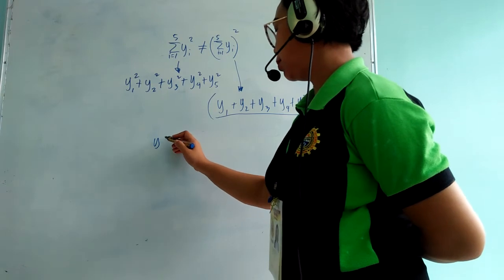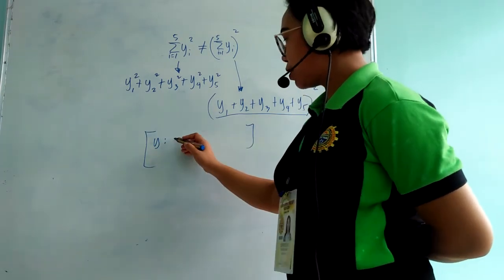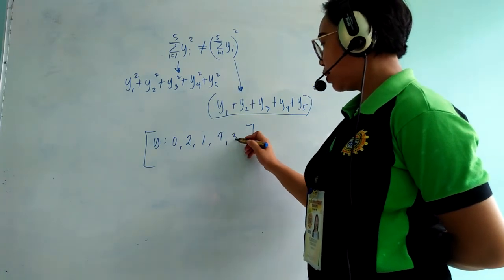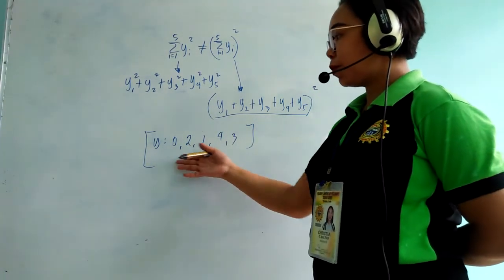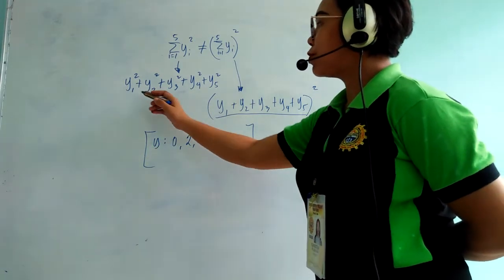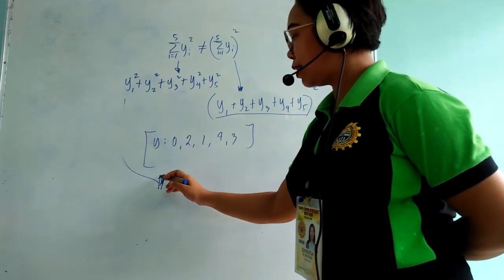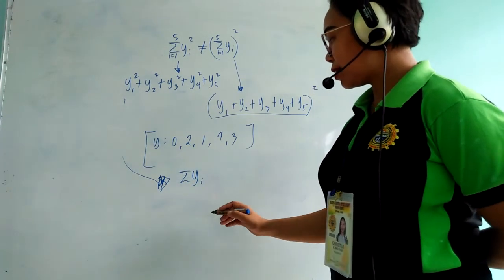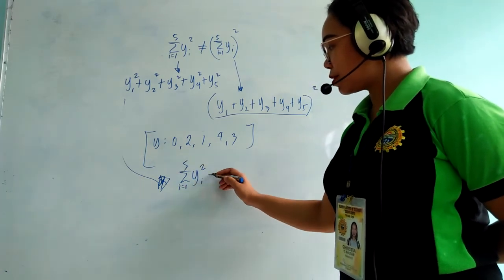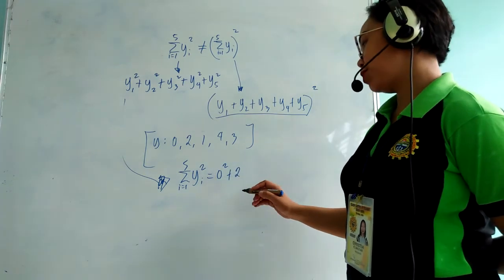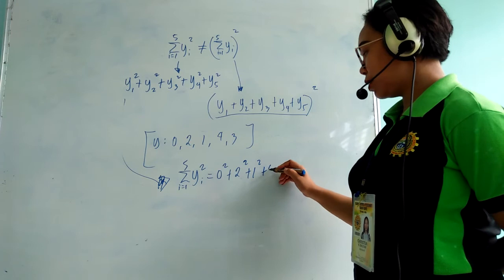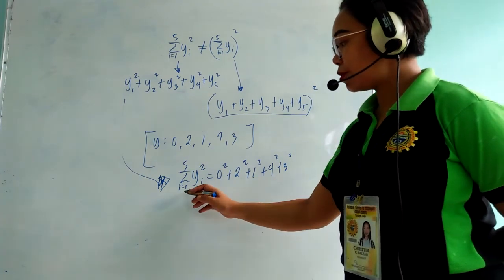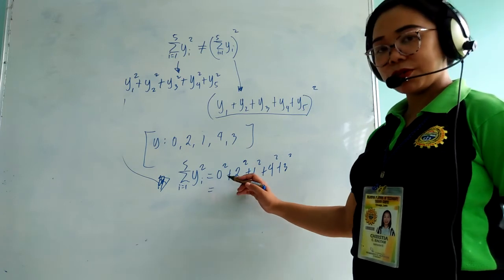Let's have an example. For example, you have the set of observations for variable y: 0, 2, 1, 4, and 3. If you want to solve for Σ(yᵢ²) from i=1 to 5, that equals 0² + 2² + 1² + 4² + 3². In this summation notation, you have to square each observation first before getting the sum.